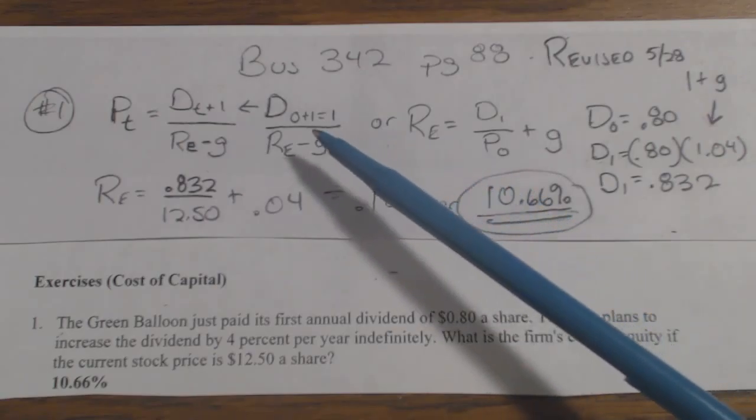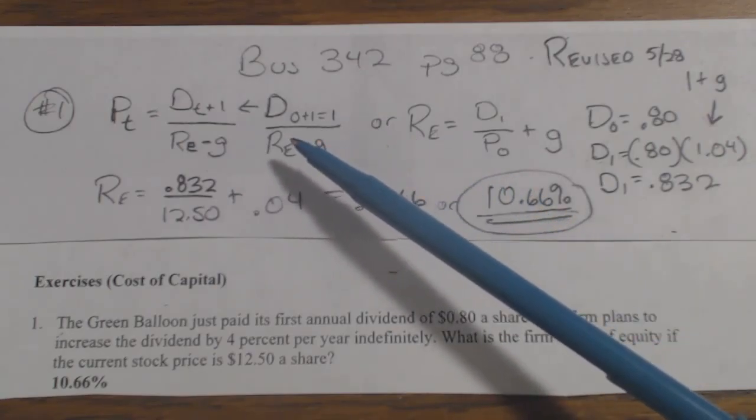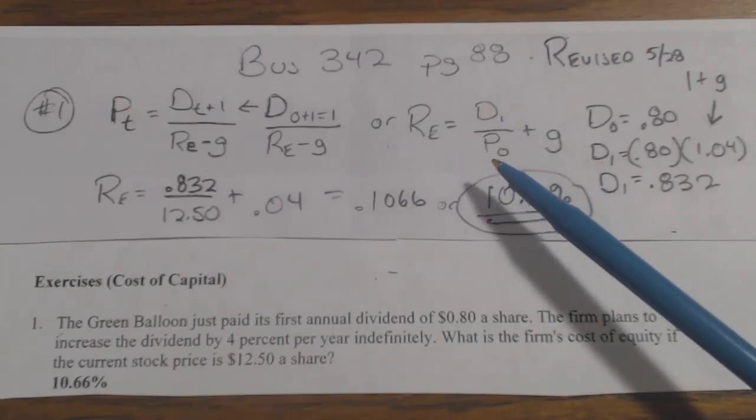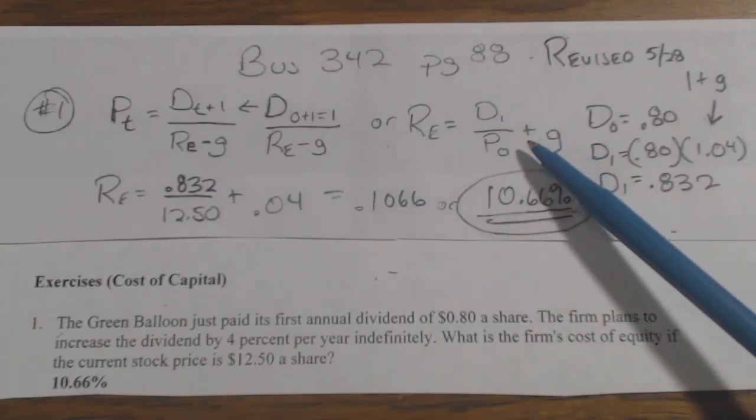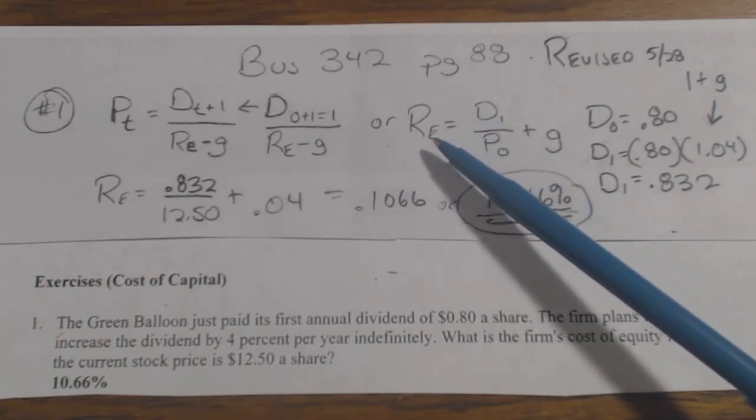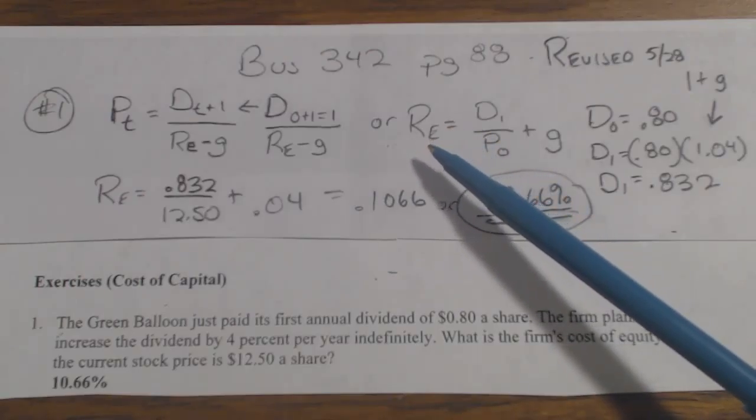It's RE, and they've changed it a little bit. They've moved the R to the other side of the equation and put D1 over P0 and the growth over here. So basically, the cost of equity or the return on equity, depending on if you're the shareholder or the firm, same thing though.